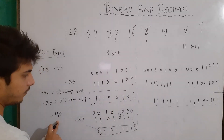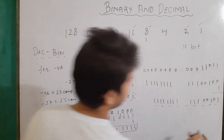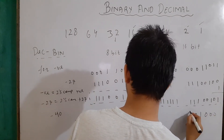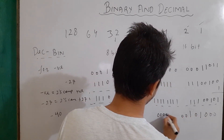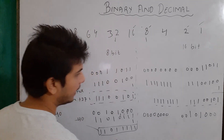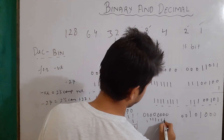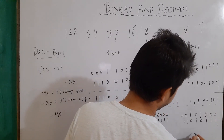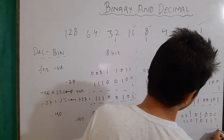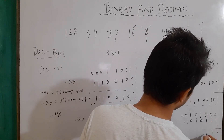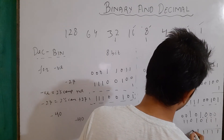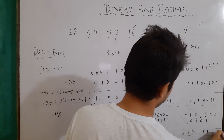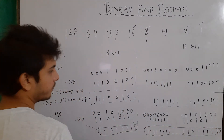For 16-bit binary equivalent of minus 40, we first find the binary equivalent of positive 40 with 16 bits: 0 0 0 0 0 0 0 0 0 0 1 0 1 0 0 0. We flip all bits for the one's complement, then add 1. After carrying through the addition we get: 1 1 1 1 1 1 1 1 1 1 0 1 1 0 0 0, which is the 16-bit binary equivalent for minus 40.